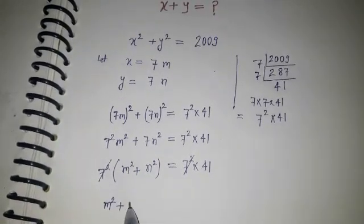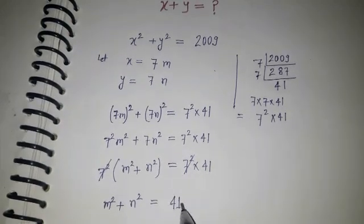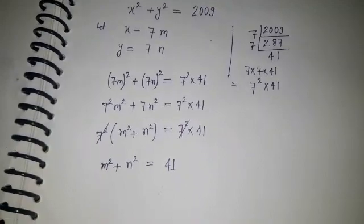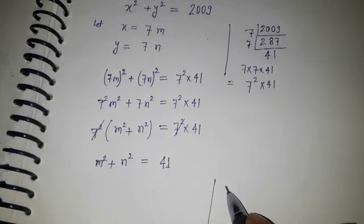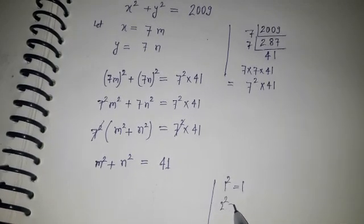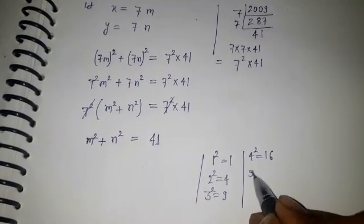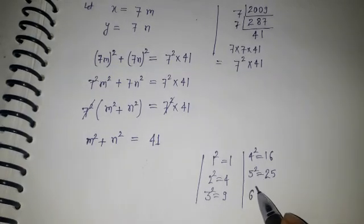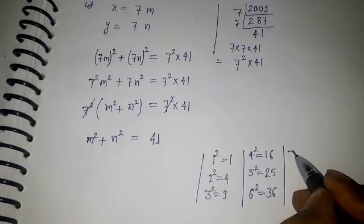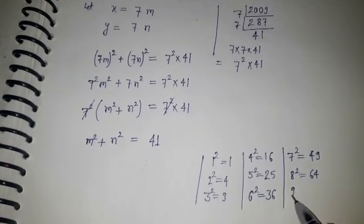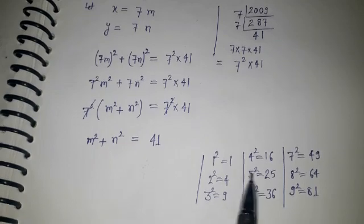So we get m squared plus n squared equals 41. Now we need to find integer values. Recall the perfect squares: 1 squared is 1, 2 squared is 4, 3 squared is 9, 4 squared is 16, 5 squared is 25, 6 squared is 36, 7 squared is 49. We need two of these that sum to 41.